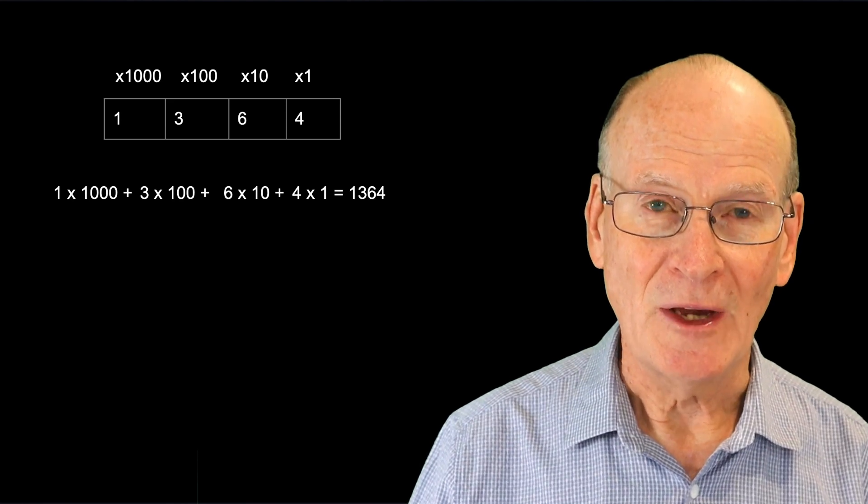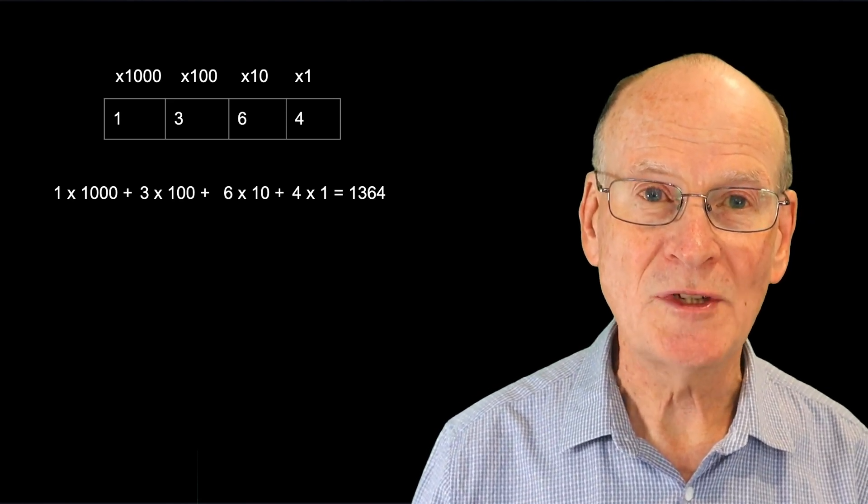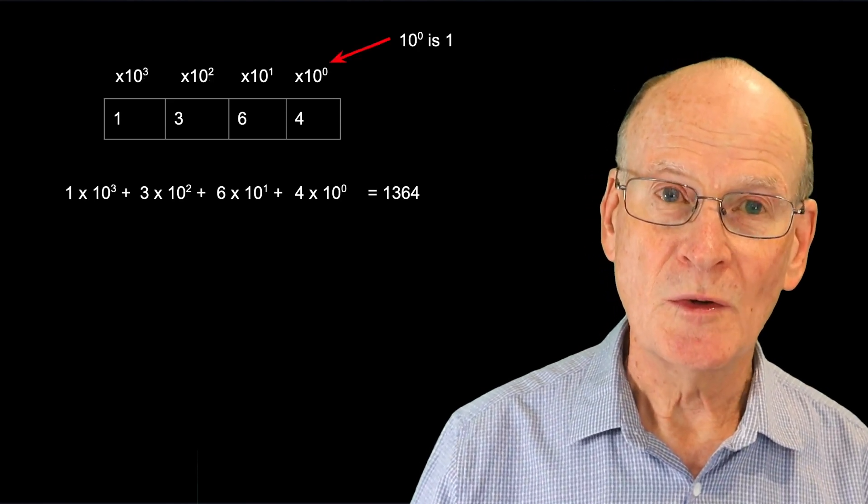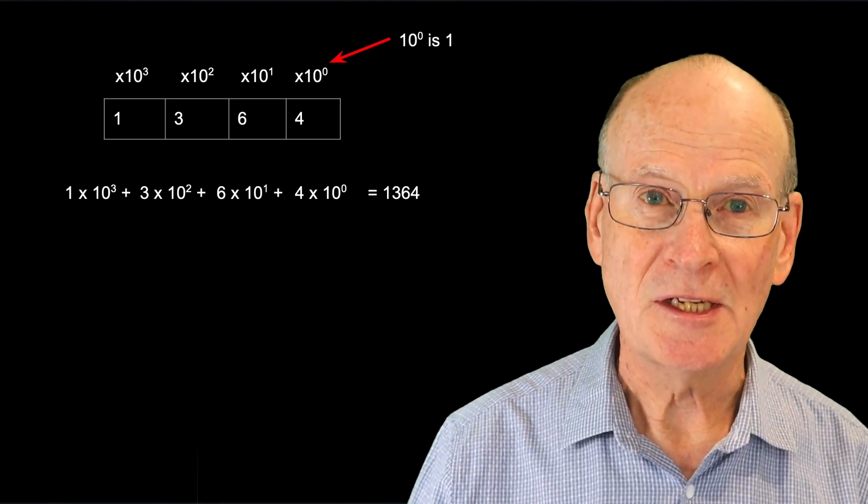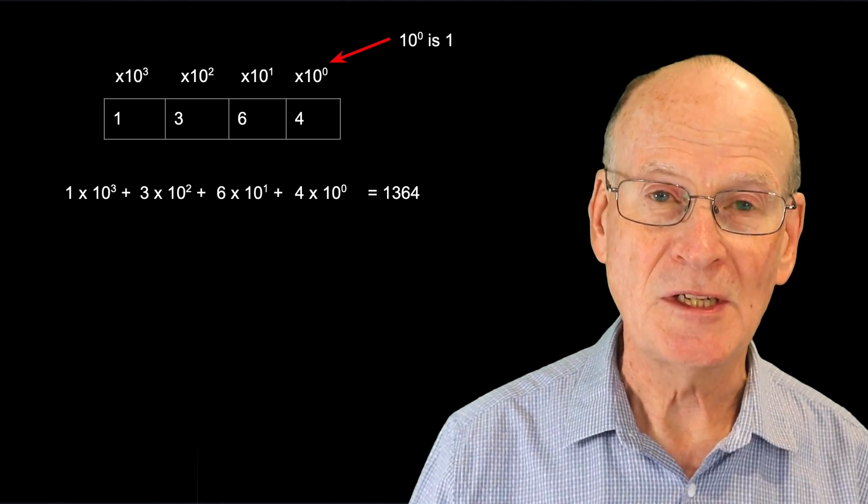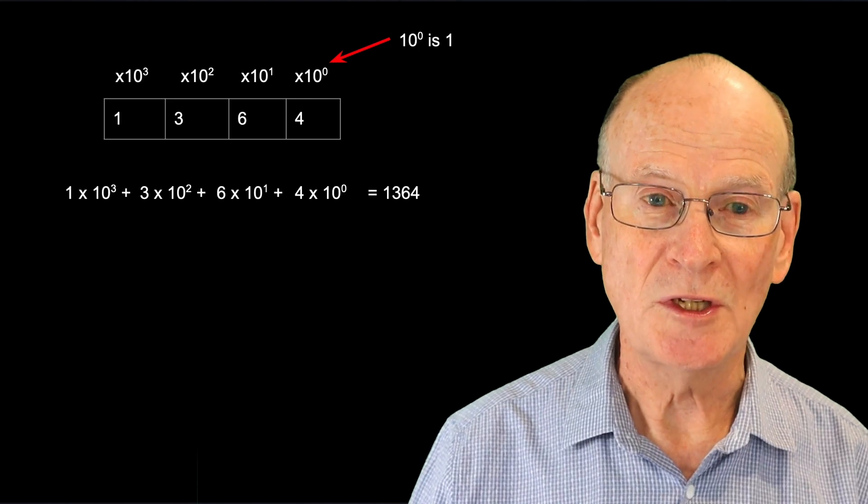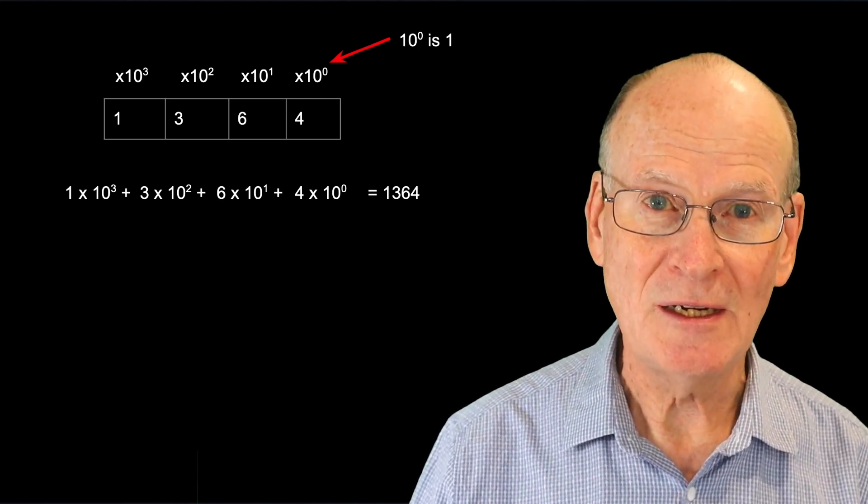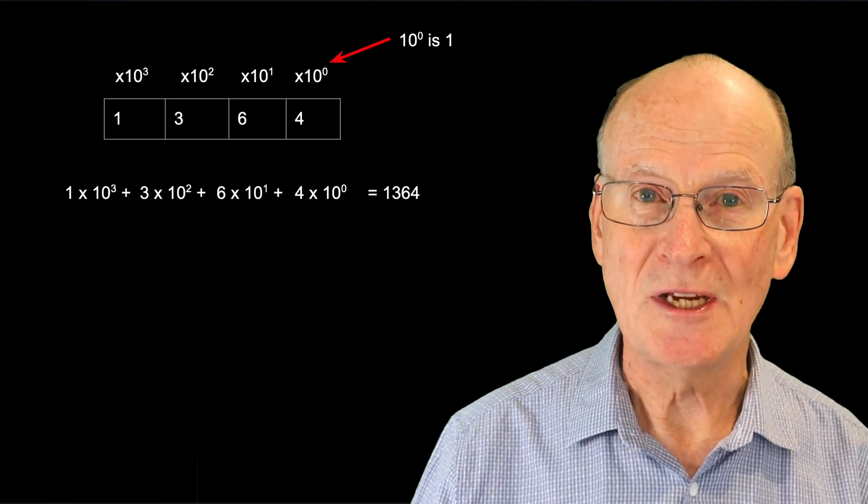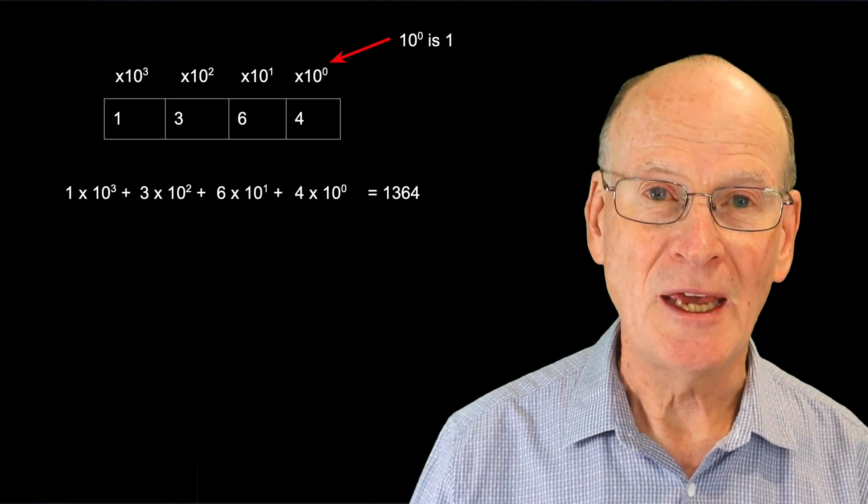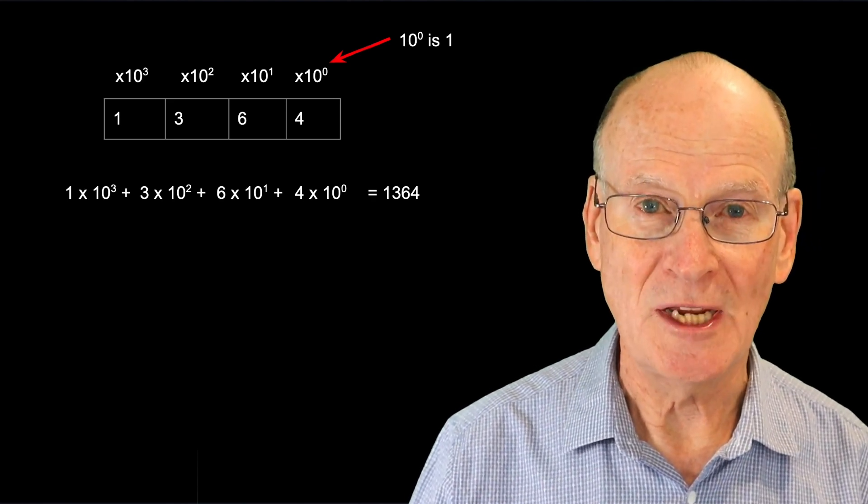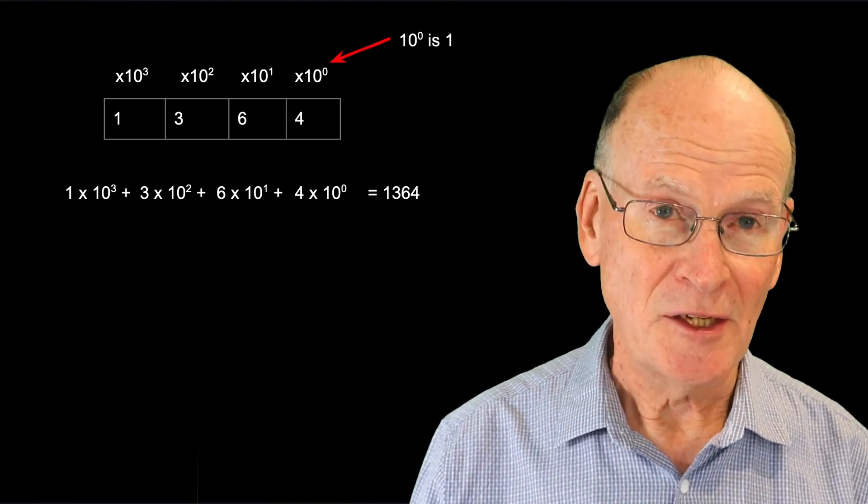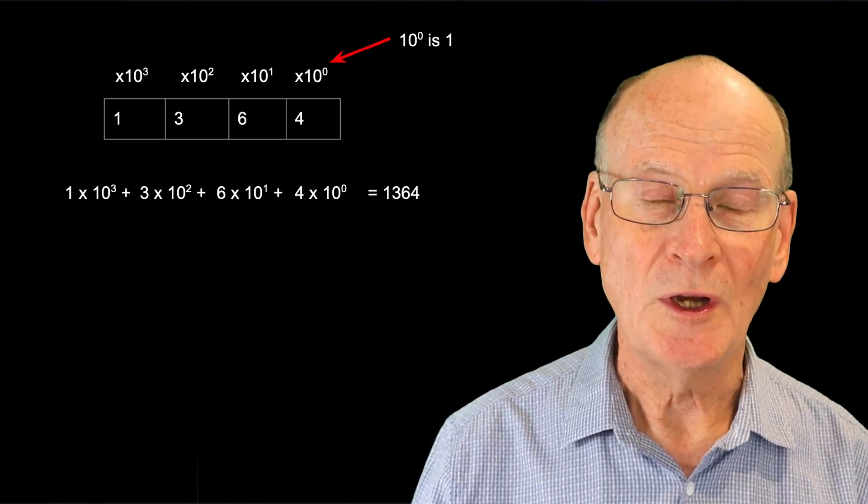Now the other thing about this is that the weights are a power of 10. So the rightmost symbol has a weight of 10 to the 0, which is 1. The second to the right has a weight of 10 to the 1, or 10. The third to the right has a weight of 10 to the 2, or 100. And the fourth has a weight of 10 to the 3, or 1000. That's the decimal number system, and we all know and understand that.